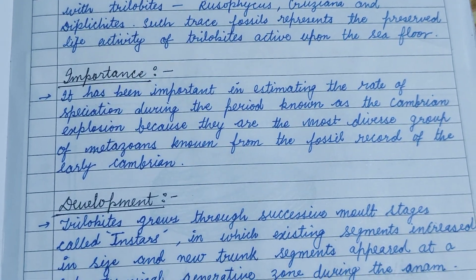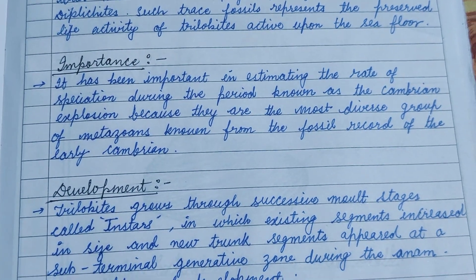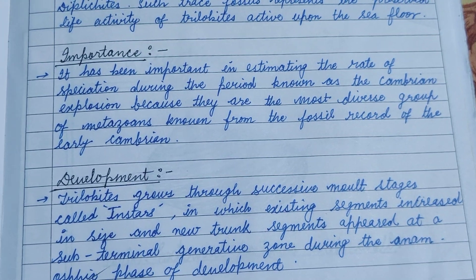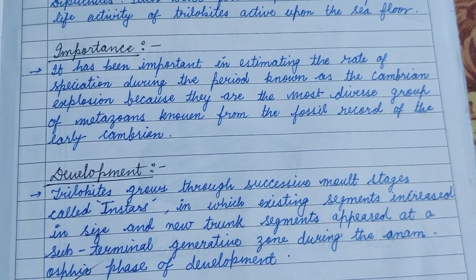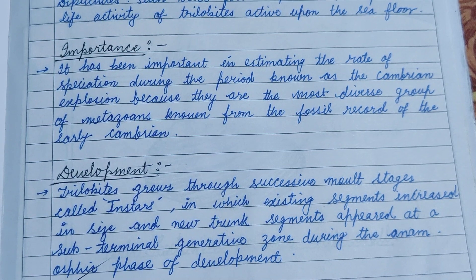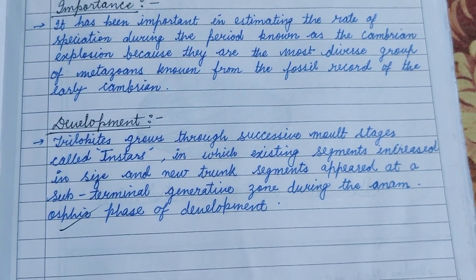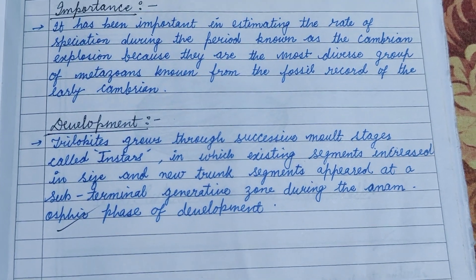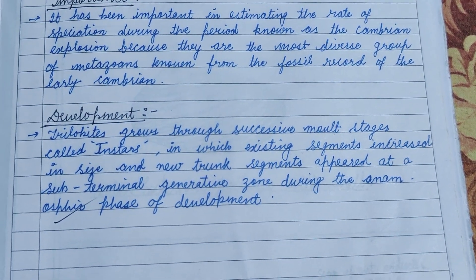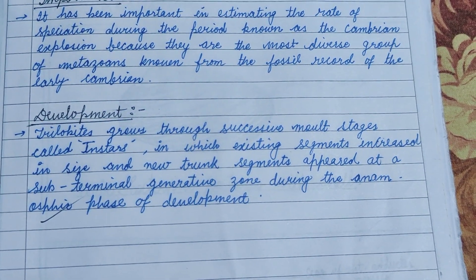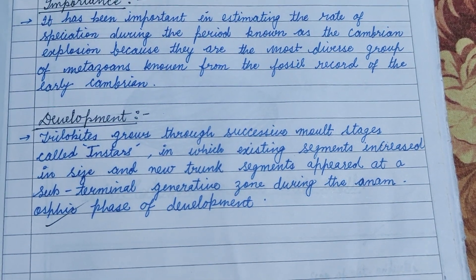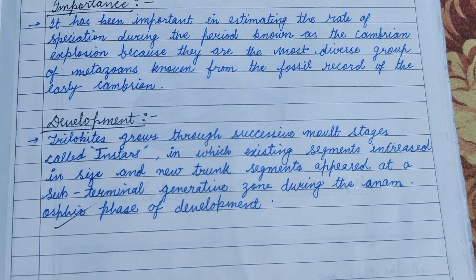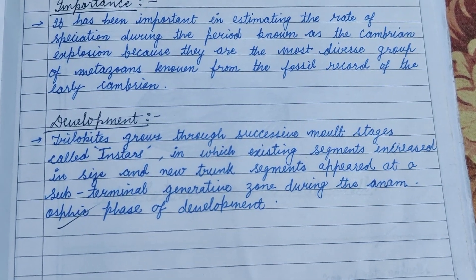The importance of trilobites lies in estimating the rate of speciation during the Cambrian explosion, as they are the most diverse group of metazoans from the fossil record of the early Cambrian. The development of trilobites progresses through successive molt stages called instars, in which existing segments increase in size and new trunk segments appear at a sub-terminal generative zone during the anamorphic phase of development.